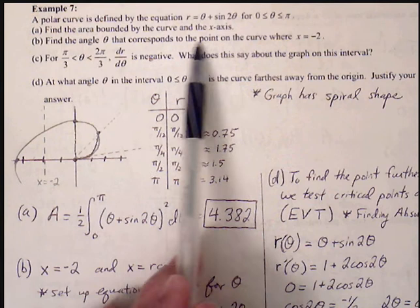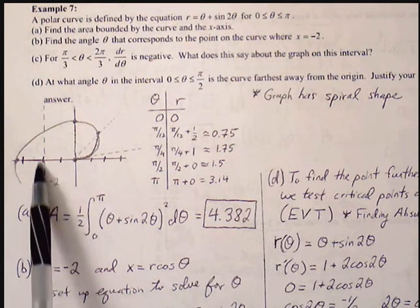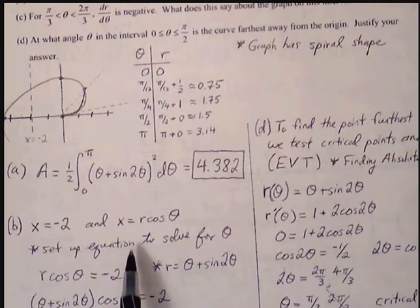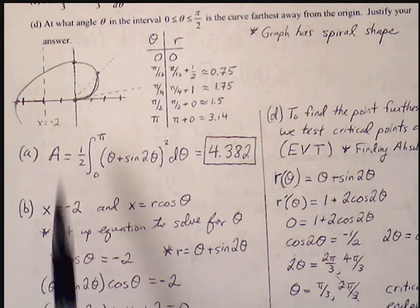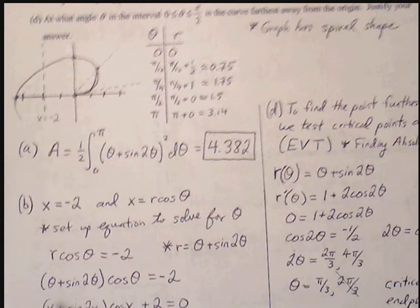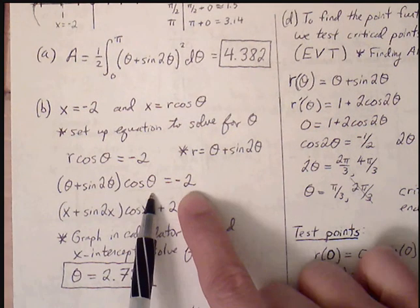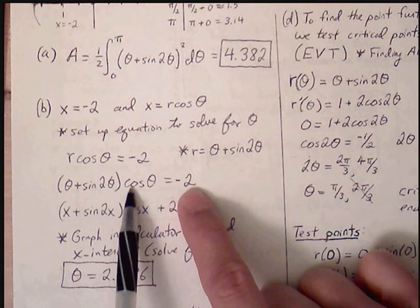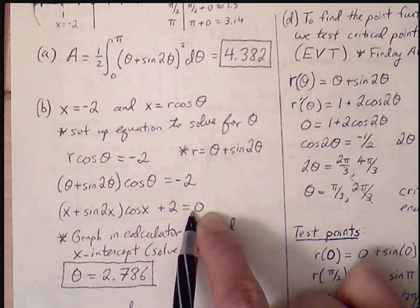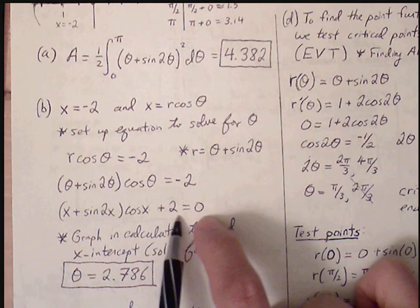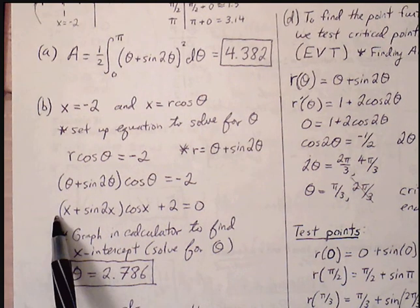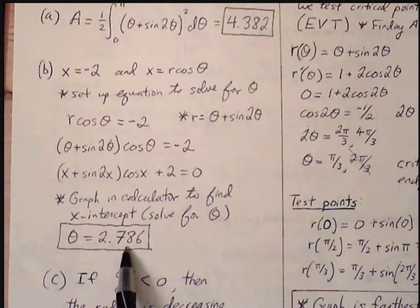Part b: Find the angle theta corresponding to the point on the curve where x equals negative 2. Since x equals r cosine theta, we substitute r to get (theta plus sine of 2 theta) cosine theta equals negative 2. This is hard to solve algebraically, so we rearrange to set everything equal to zero and look for the x-intercept in the calculator. Plugging it all in under y1 and finding the x-intercept gives theta approximately equal to 2.786.